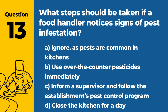Question 13. What steps should be taken if a food handler notices signs of pest infestation? The answer is C: Inform a supervisor and follow the establishment's pest control program. Prompt action and adherence to a pest management plan are essential for controlling infestations.